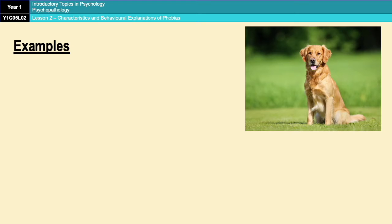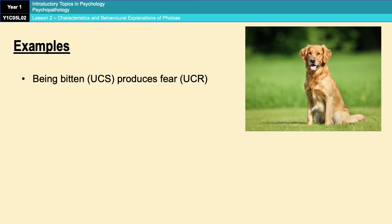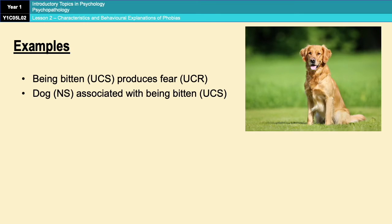A phobia of dogs could come about through being bitten. Being bitten is an unconditioned stimulus that produces fear — an unconditioned response — because it hurts and is unpleasant. The dog, which was previously neutral, becomes associated with the unconditioned stimulus of being bitten. Essentially, every time you see a dog you think you're going to get bitten, so the dog becomes the conditioned stimulus producing fear — the conditioned response — because the dog has become associated with the bite.